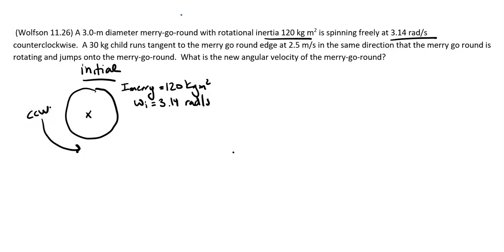Let's see, a 30 kilogram child runs to the merry-go-round edge. The child is moving at 2.5 meters per second, 30 kilograms, and it's a three meter diameter—usually we'll care about the radius, so it's a 1.5 meter radius. In the same direction the merry-go-round is rotating.